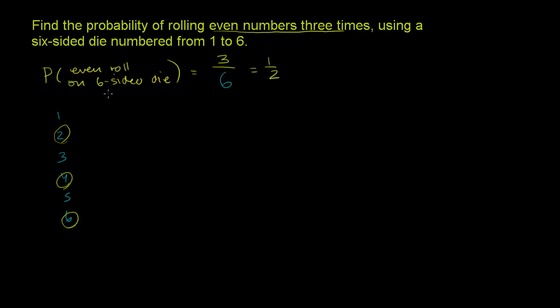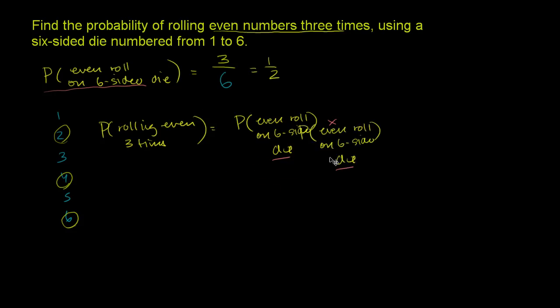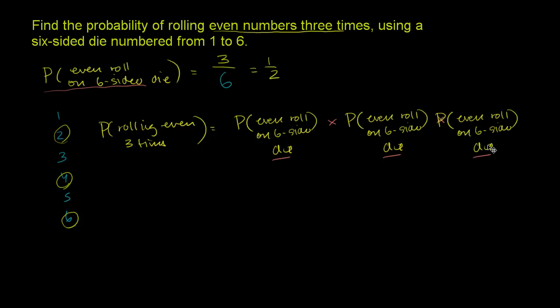So the probability of rolling even three times is equal to the probability of an even roll one time, or even roll on six sided die, times that thing again. That's our first roll. Let me copy, let me paste it, times that thing, and then times that thing again. That's our first roll, that's our second roll, that's our third roll.